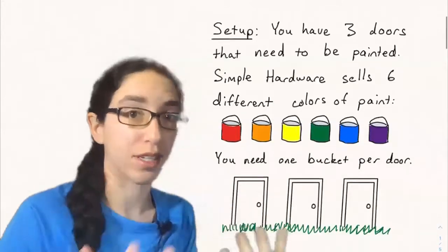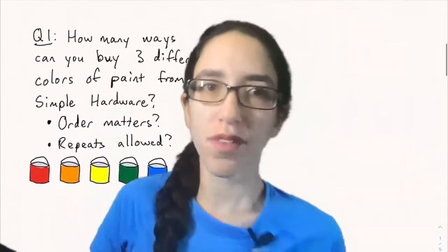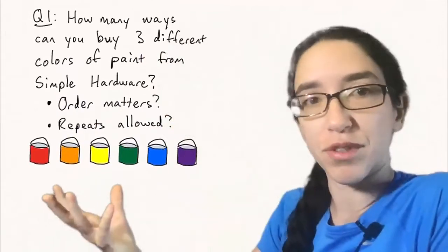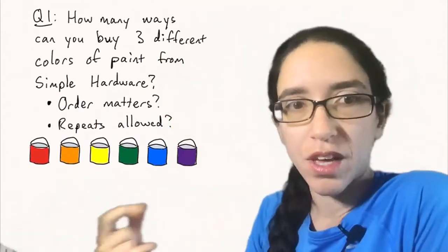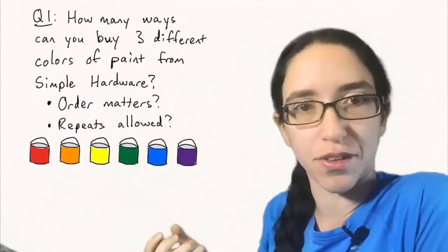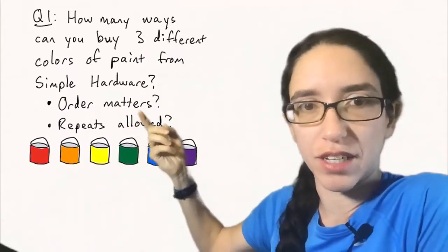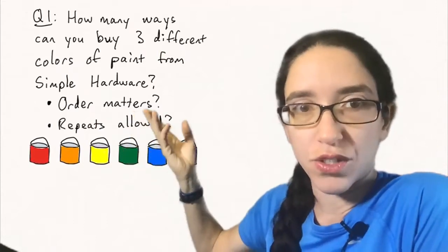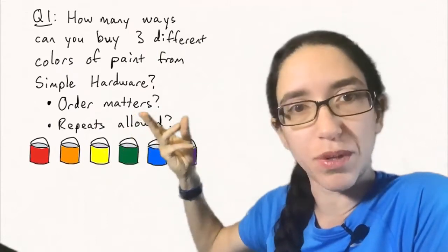So first question: how many ways can you buy three different colors of paint from simple hardware? So there's six possibilities and we're choosing three. And the questions we want to ask ourselves is does order matter and are repeats allowed in this question? We're choosing three from six but in what way?